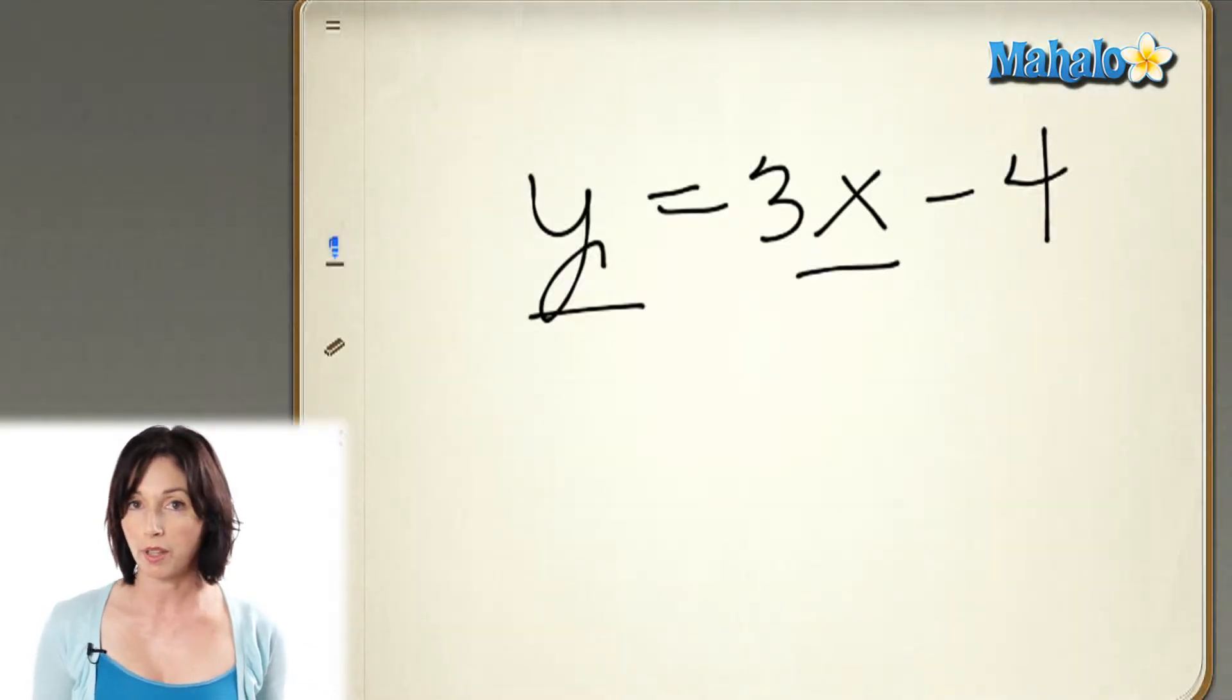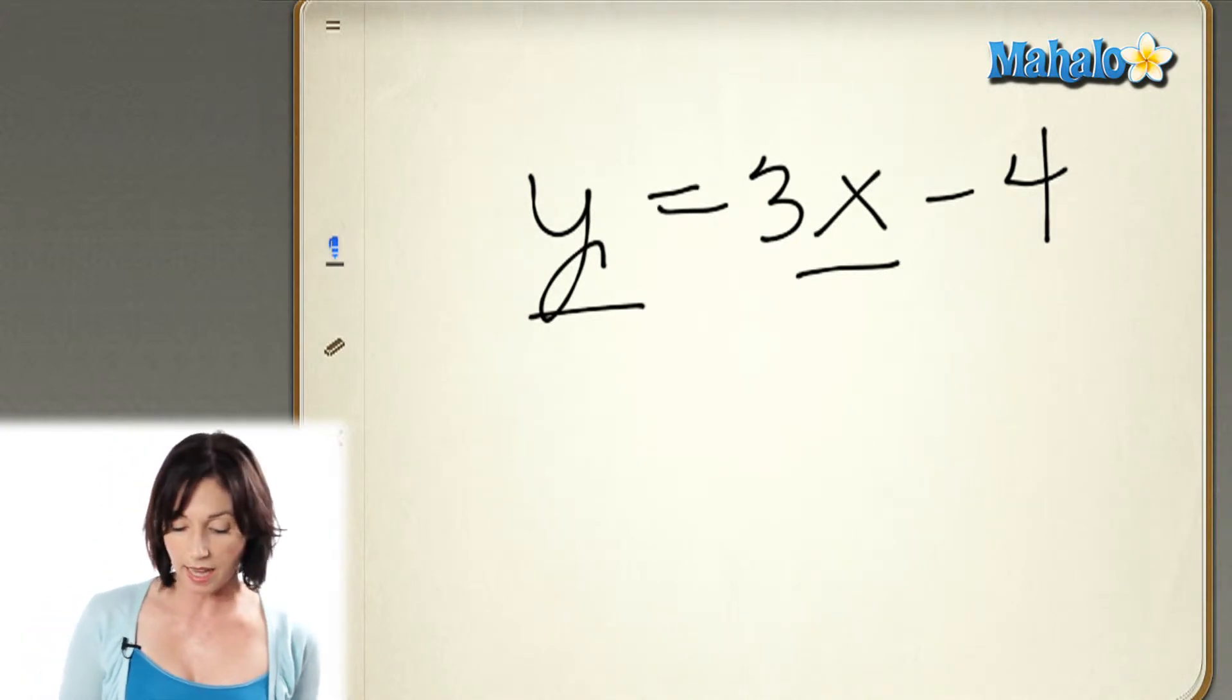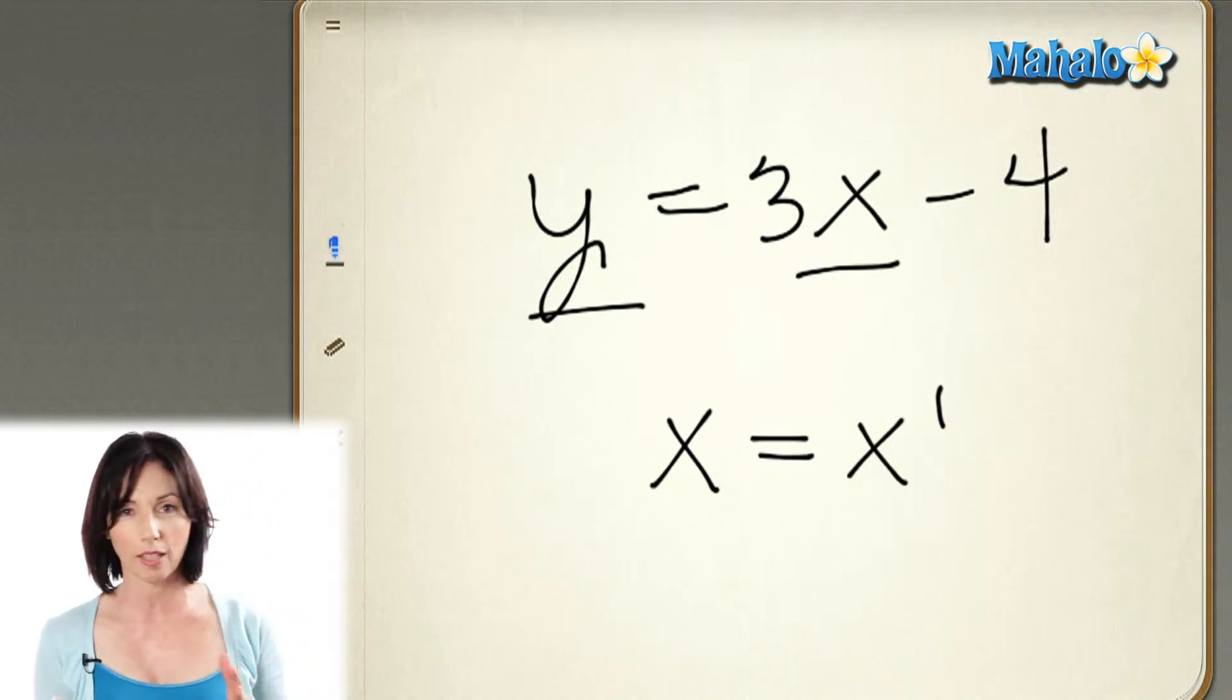Now, I can tell this is a linear equation just by looking at it, and here's how. The independent variable, the x, is only there in the power of 1. It says x, but you know, x is really just the same as x to the power of 1. We just leave the 1 off.